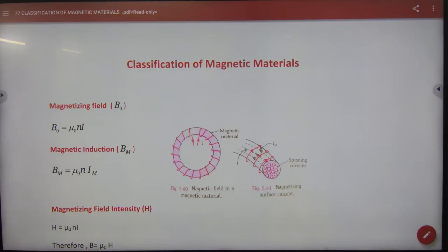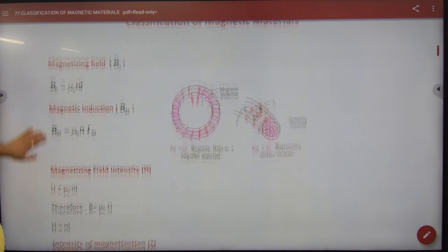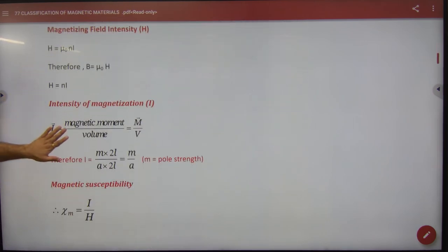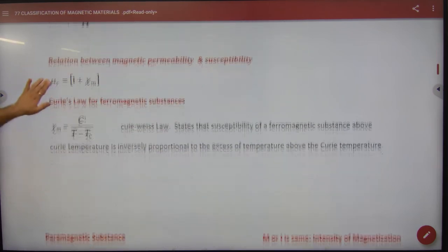In Sheet Number 77, in Magnetic or Classification of Magnetic Material, we have done all these formulas. This too, this too.